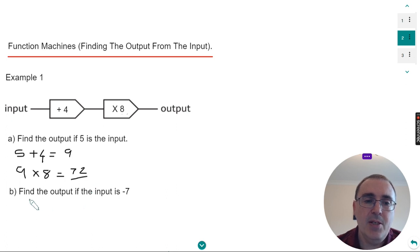Let's do part B. Find the output if the input is minus seven. We just need to be careful with negative numbers here.